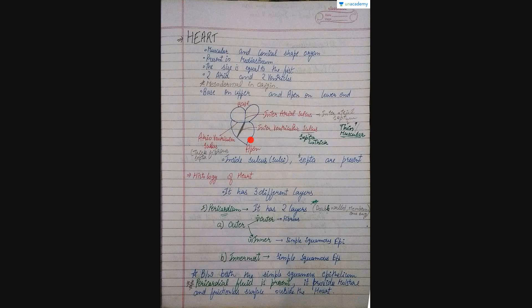The base of the heart is located on the upper side while its apex is directed downwards. As mentioned in NCERT, the interatrial septum is thin and muscular, the interventricular septum is thick, and the atrioventricular septum is thick and fibrous. Being fibrous is very important because it prevents the electrical discharges of the atria from reaching the ventricle directly, enabling coordinated activity of the four chambers.